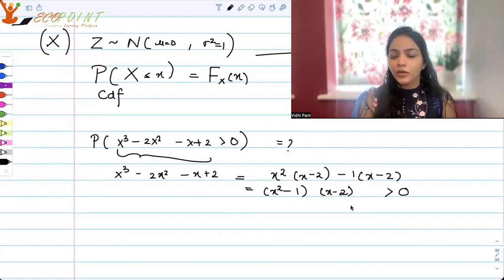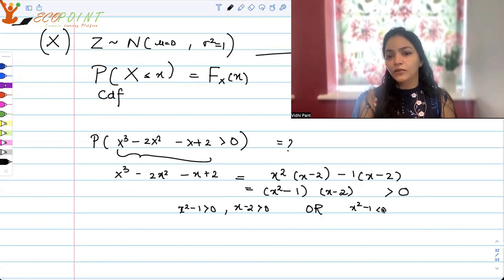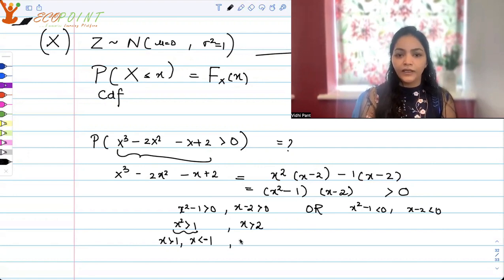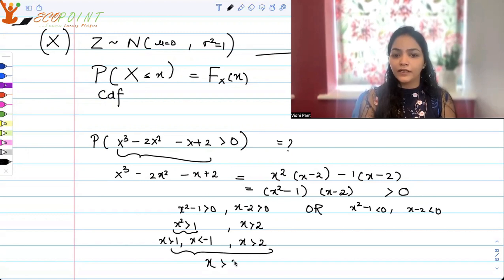When is this possible? The product of two factors is greater than 0 in case both are positive or both are negative. So X² - 1 > 0, X - 2 > 0 at the same time, or else X² - 1 < 0 and at the same time X - 2 < 0. So let's calculate this. This means X² > 1 and X > 2. From here, I will get that X is either greater than 1 or X is less than -1. From here the common part that you will get is X > 2.